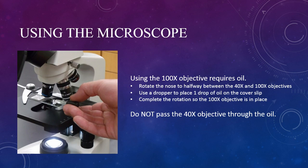It is important not to run the 40x objective through the oil. It can become contaminated by oil seeping into the objective lens and fouling the inside, in which case the objective must be taken apart and cleaned in order to be reused.